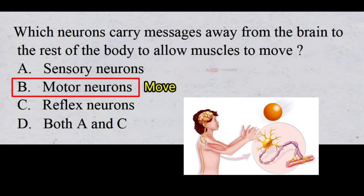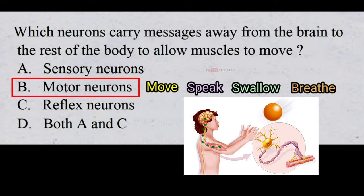Motor neurons are the cells in the brain and spinal cord that allow us to move, speak, swallow and breathe by sending commands from the brain to the muscles. The nerve fibers of motor neurons are the longest in the body; a single axon can stretch from the base of the spinal cord all the way to the toes.